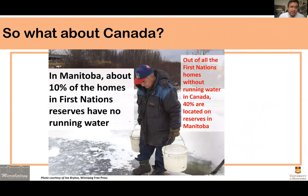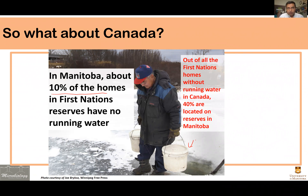What about Canada? In developing countries, access to clean water is a known problem. But in Canada too, we have small communities — especially First Nation communities — where access to clean drinking water is a huge problem. In Manitoba, about 10% of homes in First Nation communities have no running water and have to carry their water from various distances. Many of these communities have water that is not safe for drinking because it contains a high number of bacteria. Even in a developed country like Canada, there are Canadians without access to clean water.